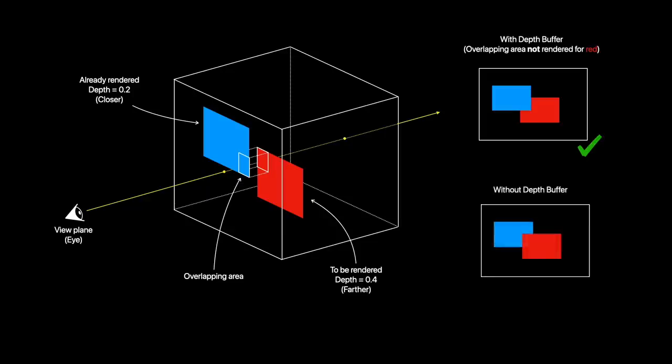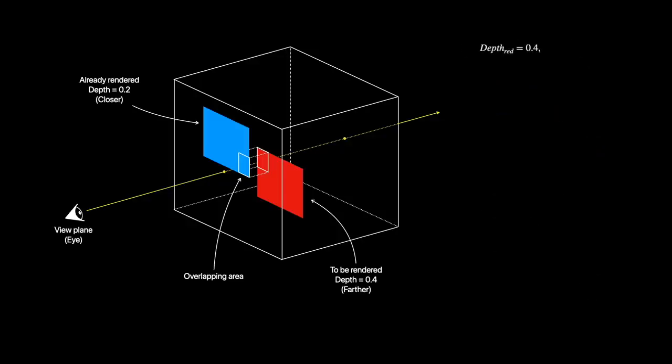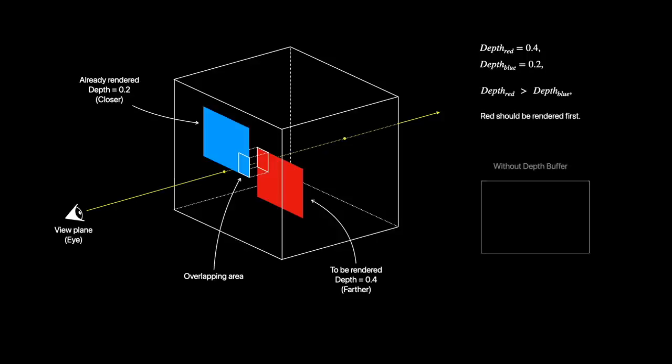This means a newly calculated pixel is always written to the final image. In this case, developers must come up with some algorithm to sort all polygons based on their depth, so the furthest polygon gets rendered first, allowing other polygons to correctly obscure parts of it and construct a correct 3D scene. After going through this pain, a 3D scene might still not look correct if two polygons intersect — because when two polygons intersect, we can't definitively tell which one is in front.